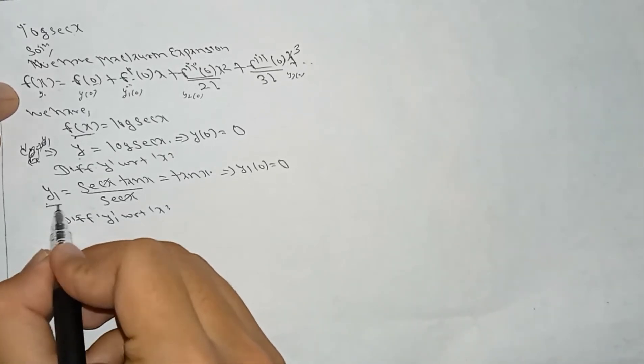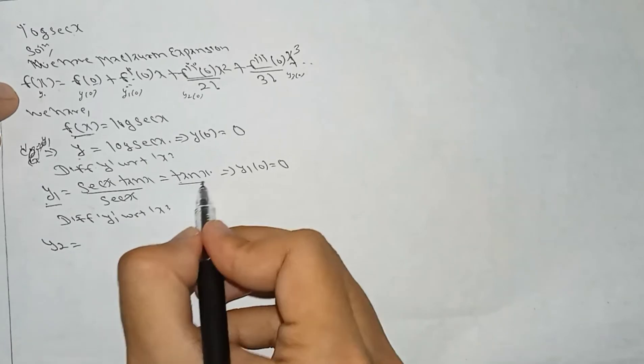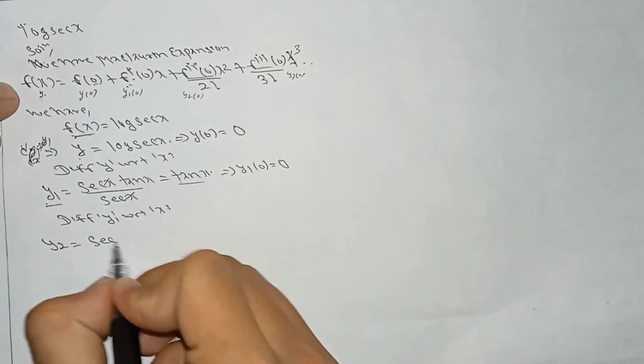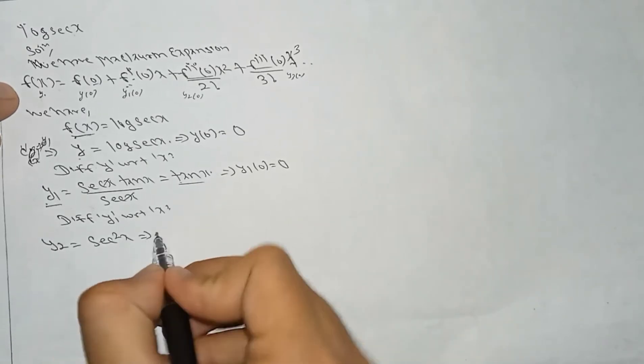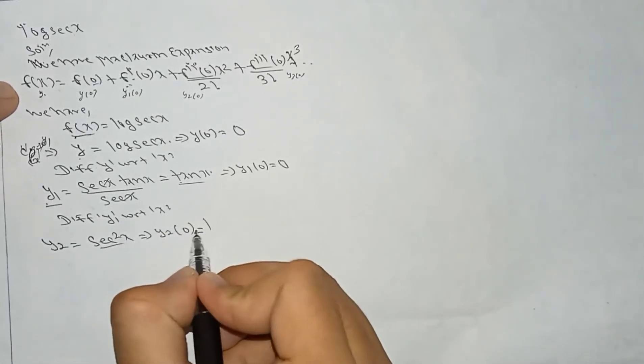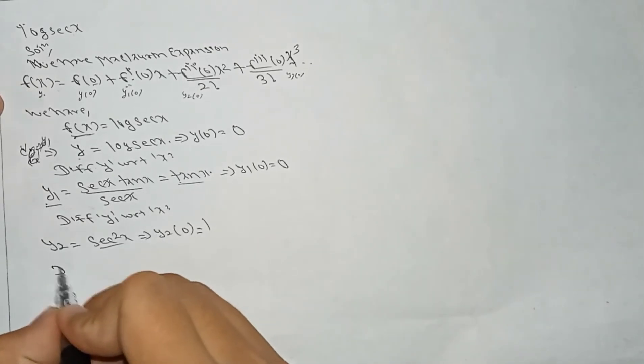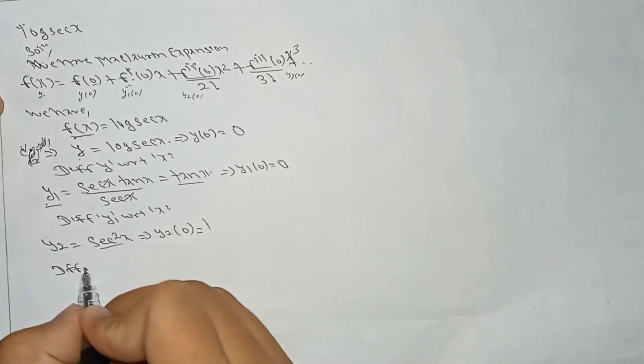Differentiating y1 again with respect to x gives y2. The differentiation of tan(x) is sec²(x), so y2 = sec²(x). Therefore y2(0) = sec²(0) = 1.